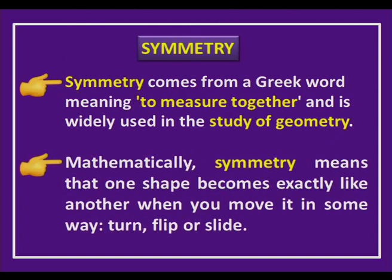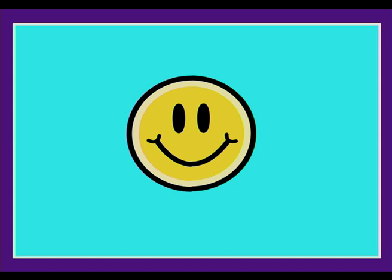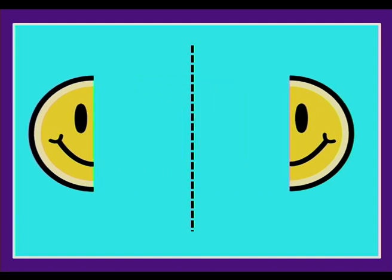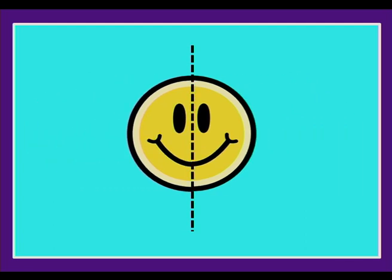Mathematically, symmetry means that one shape becomes exactly like another one when you move it in some way — whether you turn that object, flip the object, or even slide the object. Look at this smiley. I will draw a line exactly in the middle, vertically. It gets divided into two equal parts — or in other words, two congruent parts.